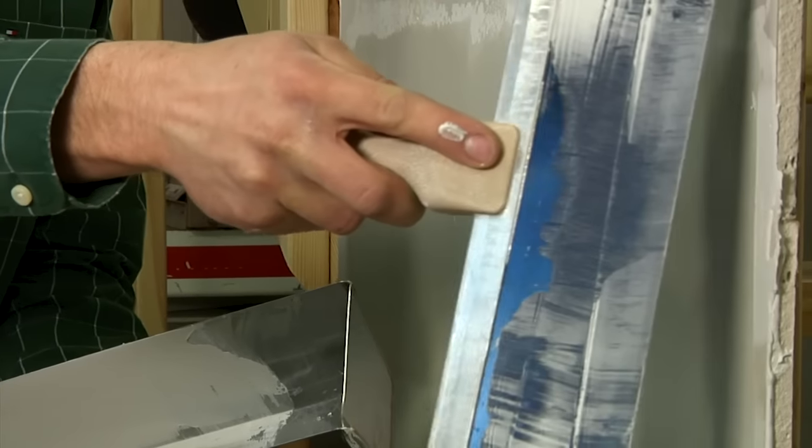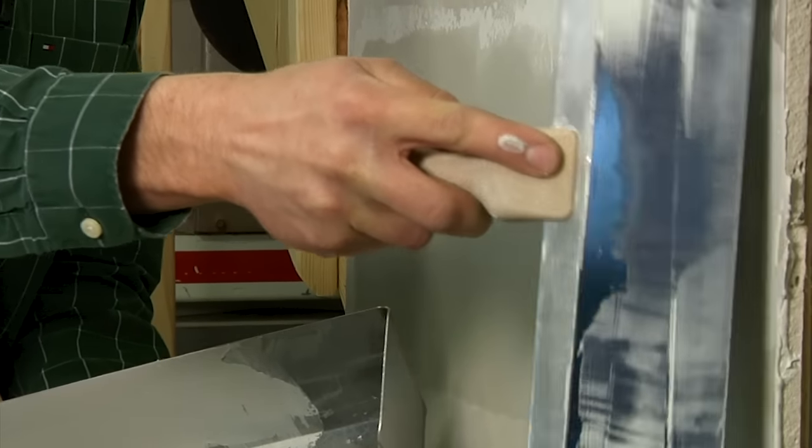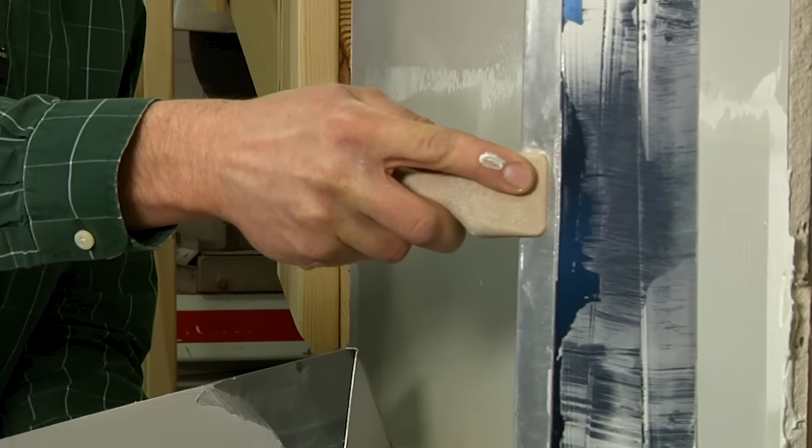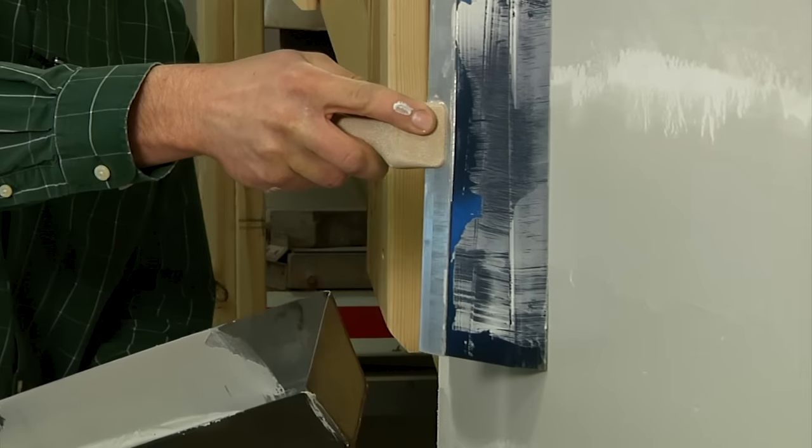I don't need more mud, so I'm going to feather again. The top edge of the knife is tight on the drywall. The bottom edge is held up a little bit. Work my way across here.